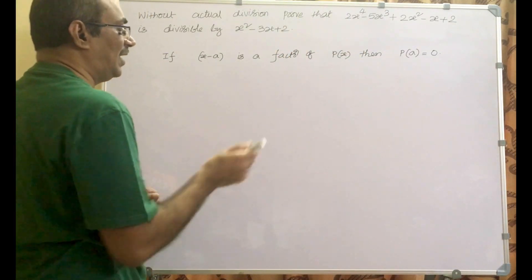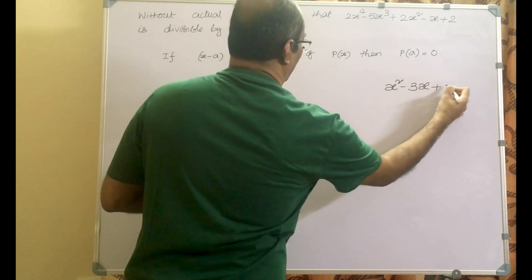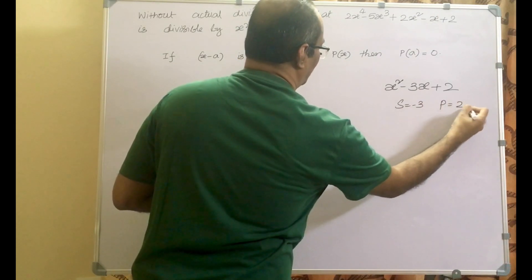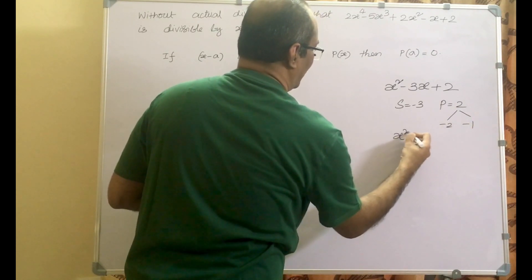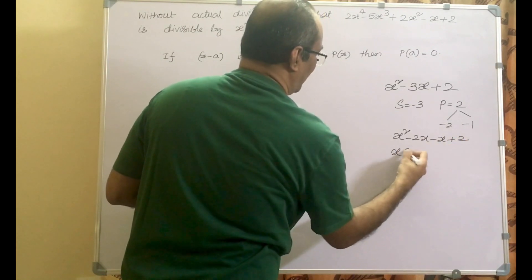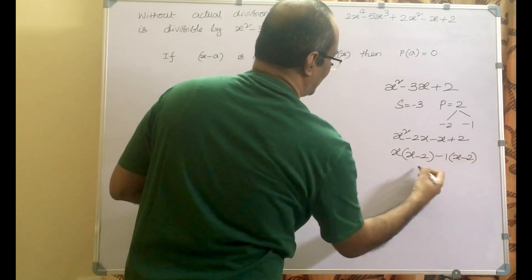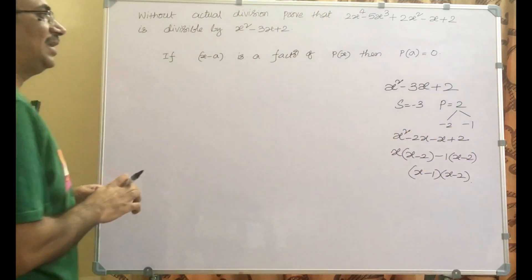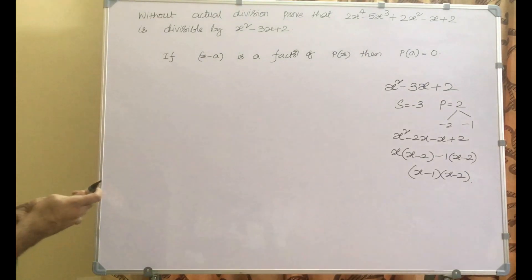Let us write down our quadratic polynomial: x square minus 3x plus 2. Let us split the middle term. Sum equals minus 3 and product equals 2, so we can write it as minus 2 and minus 1. So x square minus 3x plus 2 equals x square minus 2x minus x plus 2, which factors as x into x minus 2 minus 1 into x minus 2, giving us x minus 1 into x minus 2.